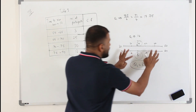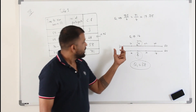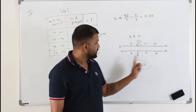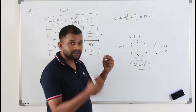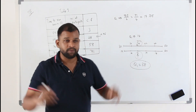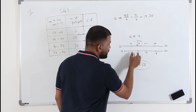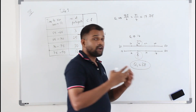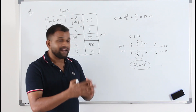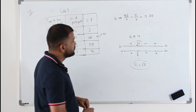In the linear interpolation method, we assume that values are equally distributed within the class interval. For example, if 10 students have shoe sizes between 30 and 50, we assume those 10 students are equally spread — so 30 to 34 has 2, 34 to 38 has 2, 38 to 42 has 2, and so on. We know this isn't exactly true, but to apply linear interpolation we make this assumption.